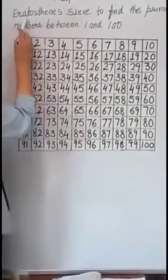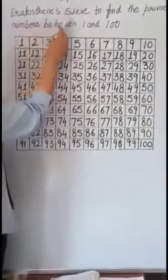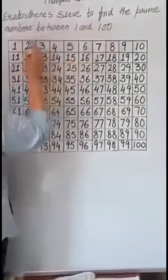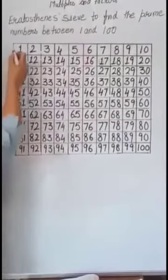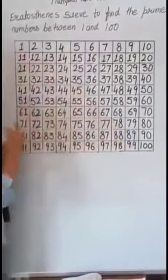We will start a new topic to find the prime numbers between 1 and 100. I have written 1 to 100 in this grid.